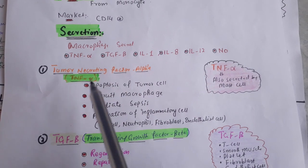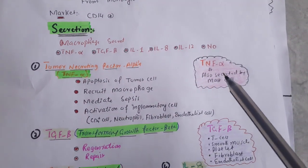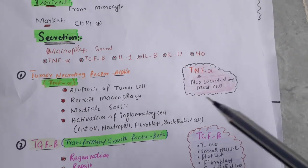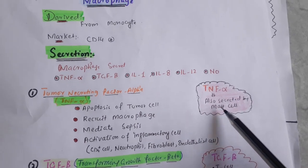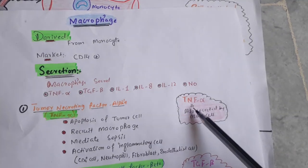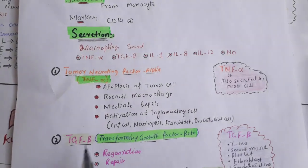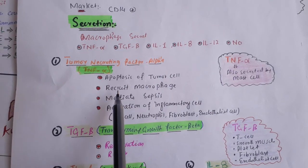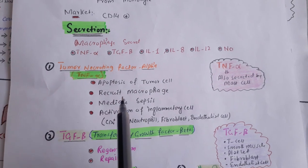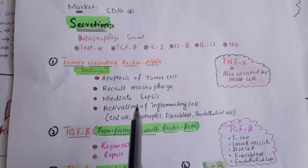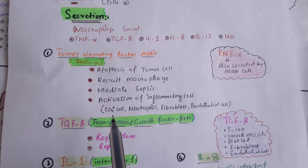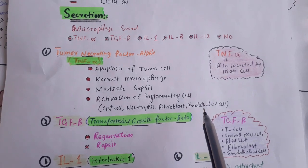TNF-alpha is secreted from macrophage but can also be secreted from mast cells — both mast cell and macrophage start with the letter 'M' and 'A', which is how you remember this. TNF-alpha causes apoptosis of tumor cells, recruits and activates more macrophages to the area of infection and inflammation, mediates sepsis, and activates other cells of inflammation such as CD4 positive T cells, neutrophils, fibroblasts, and endothelial cells.